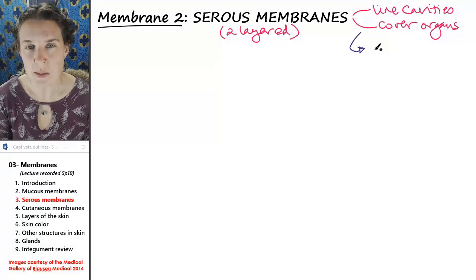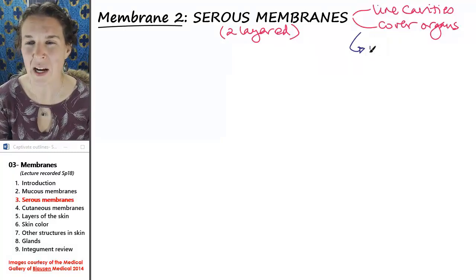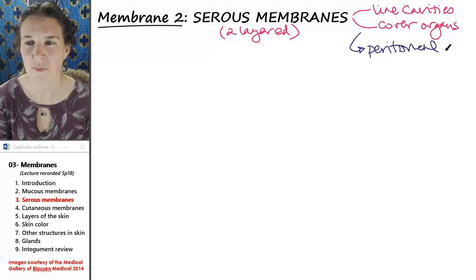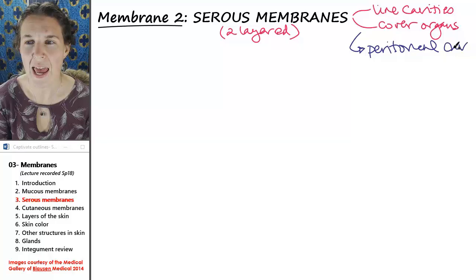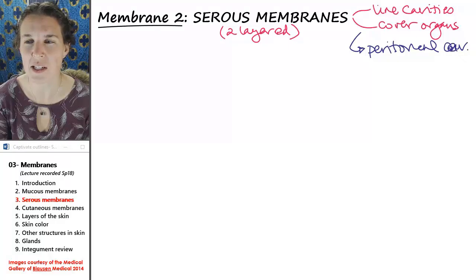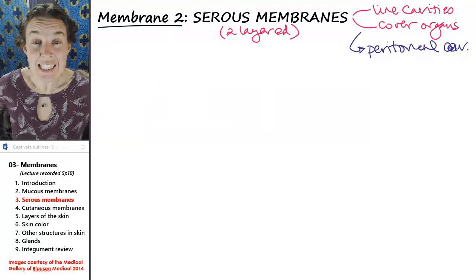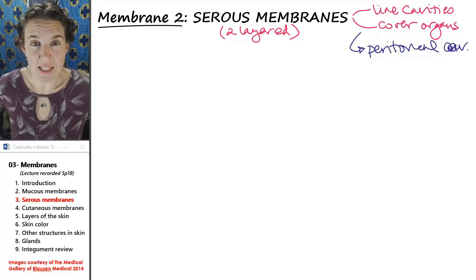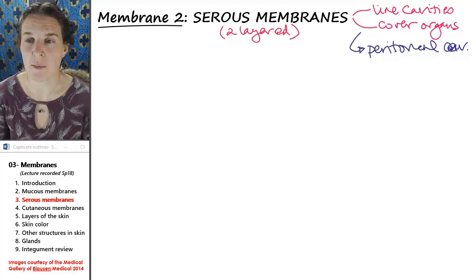Serous membranes line the peritoneal cavity. Do you remember where the peritoneal cavity is? It's inside the abdominal cavity—a cavity within the abdominal cavity.